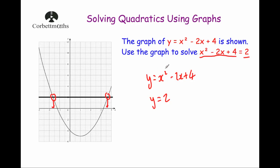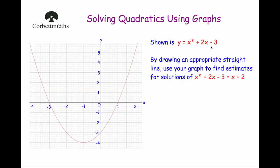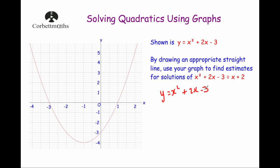Now I'm going to look at some slightly more complex examples. Here's our first example: we've got the graph for y equals x squared plus 2x minus 3. It says, by drawing an appropriate straight line, use your graph to find estimates for the solutions of x squared plus 2x minus 3 equals x plus 2. Our graph is y equals x squared plus 2x minus 3, which is the expression on the left-hand side. We're going to draw the graph of y equals x plus 2, and find where it meets the quadratic curve — those intersection points will be the solutions.